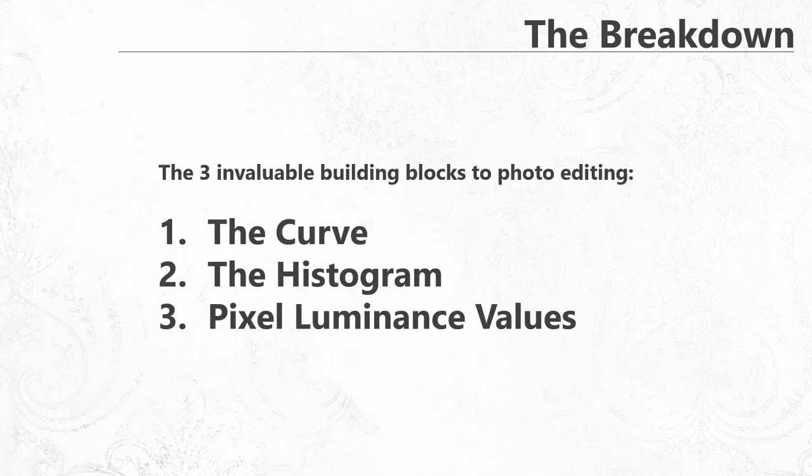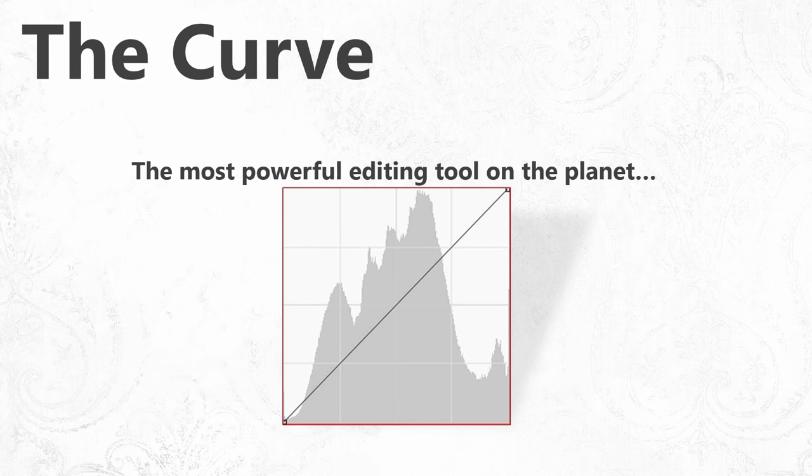The curve, the histogram, and luminance values are the three most invaluable building blocks to photo editing. The curve is probably the most powerful editing tool on the planet. I've done some really incredible things with curves, and your whole editing process can really be done with curves.